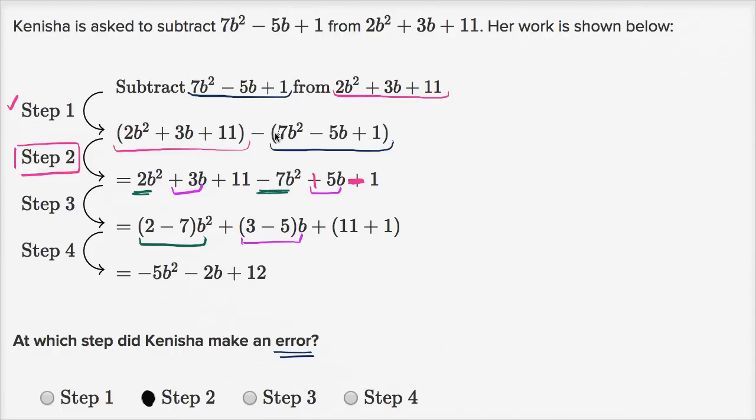But since she didn't do the distribution correctly, it should be 11 minus one, as we said before, because you're gonna distribute this negative sign. But she left that as a plus one. And so that's why she got that over there.